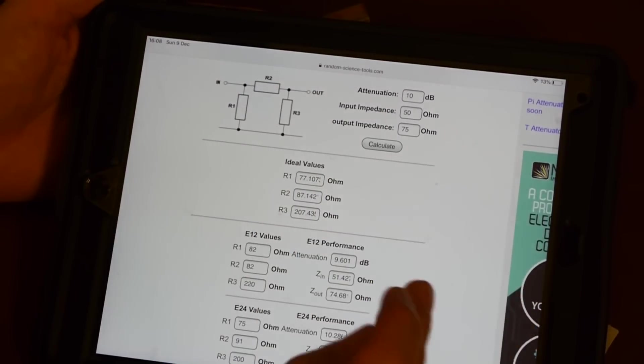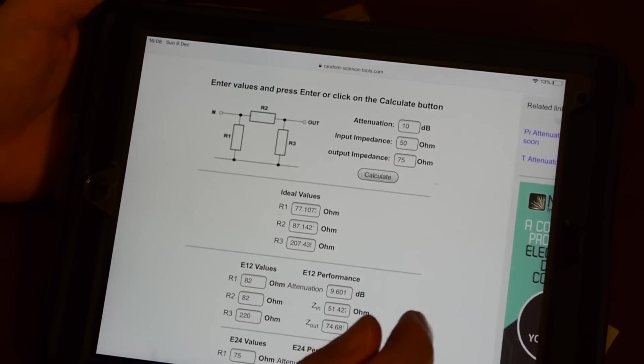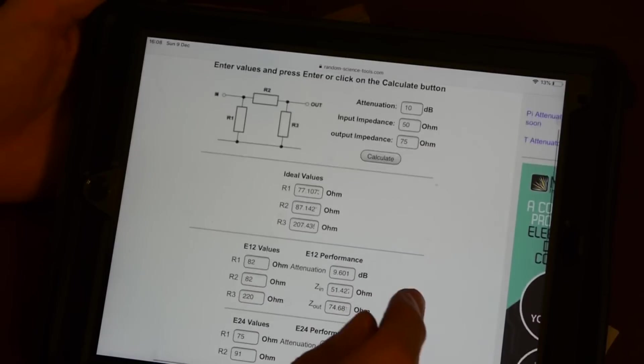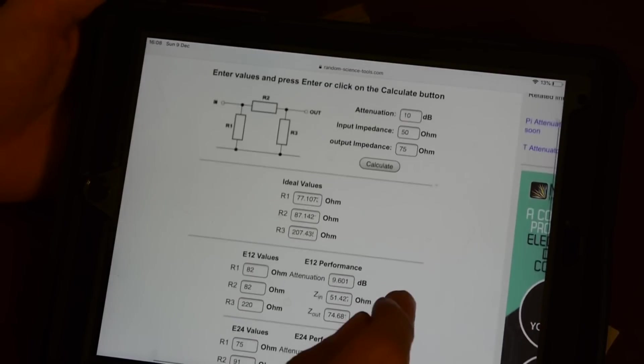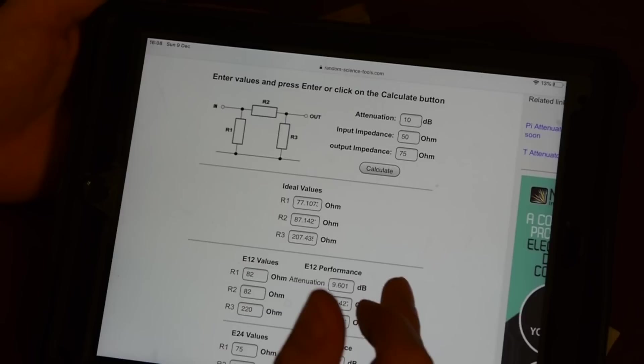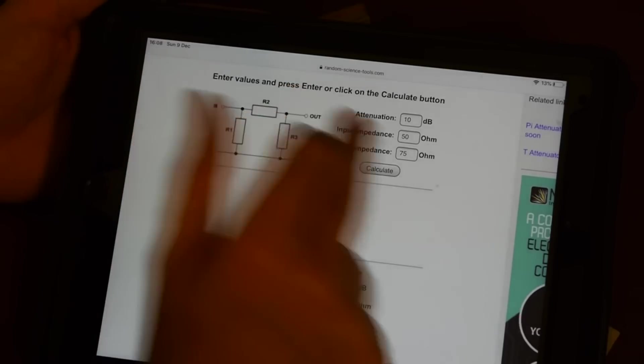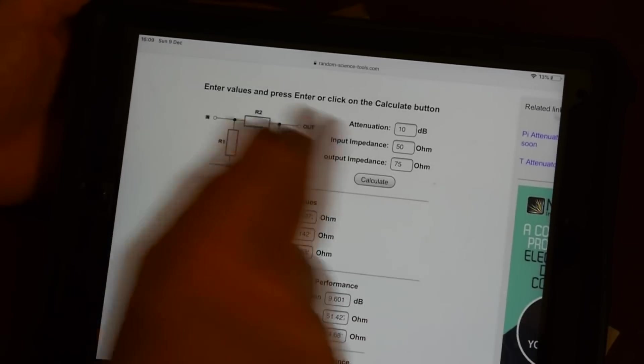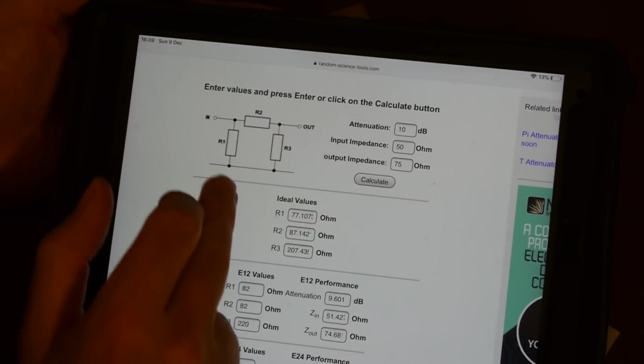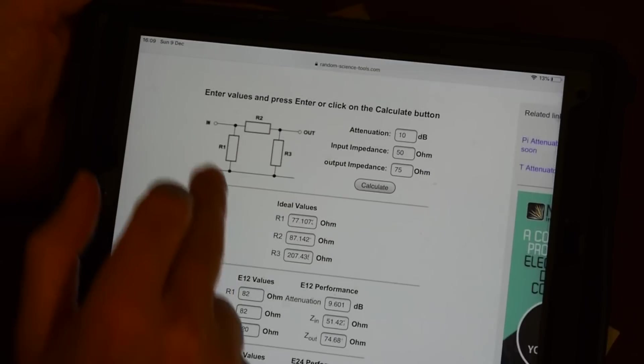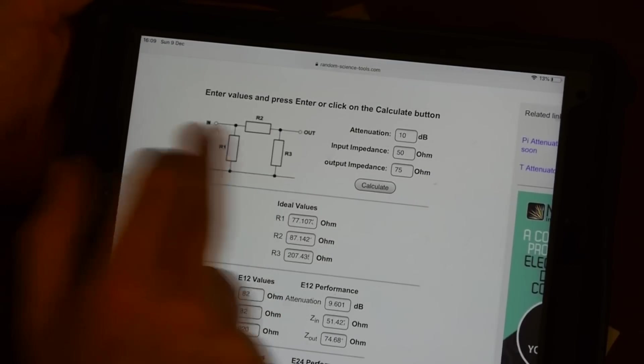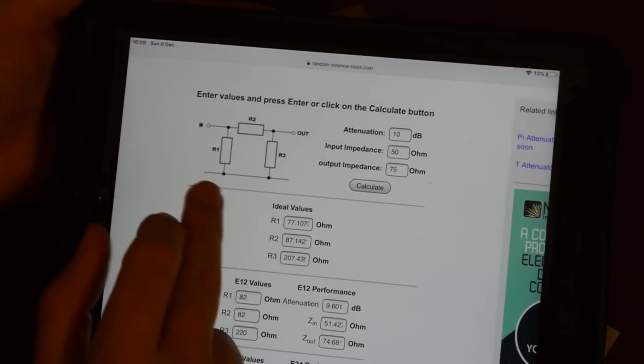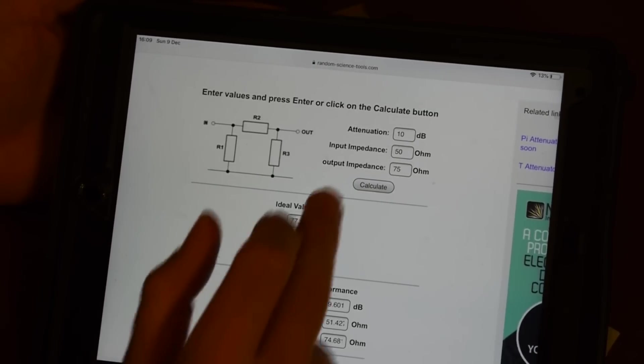What you've got to do is make a matching pad. You can actually calculate it yourself relatively easily, but why do the work when you can just go online and use a calculator to do it. So I've got my iPad here and I'm using one of these online calculators. I'll leave a link to this calculator in the show notes. They call it a pi type because if you can see the shape there it looks like a pi symbol. So that's why they call it a pi attenuator.